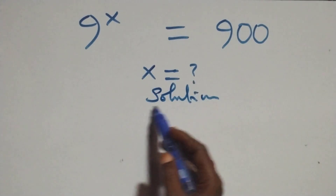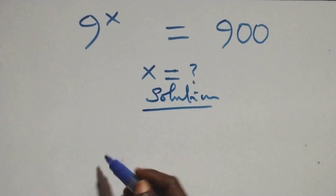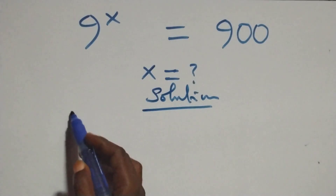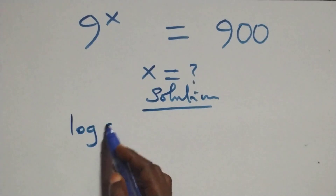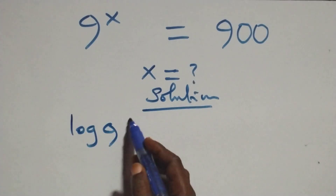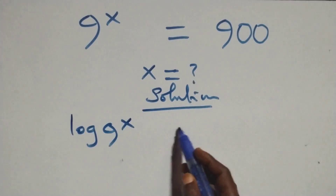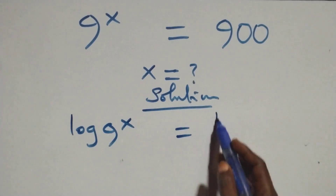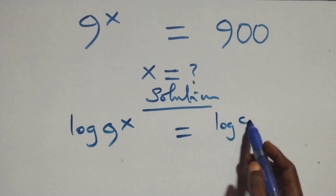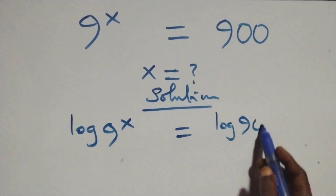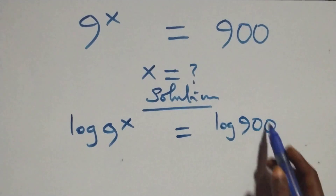And what we have here, we take the log on both sides. We have log of 9 raised to the power x equals to log of 900.